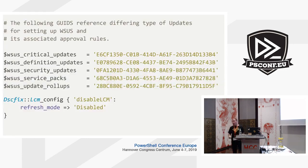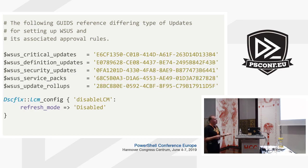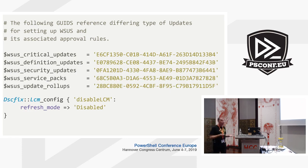Looking at the configuration, there are various categories of updates: critical updates, definition updates, security updates, and service packs. Being Microsoft, these all have lovely GUIDs, so you start off by expressing these just as variables. I haven't even put comments there other than something at the top — it's pretty obvious from the variable names what we're referring to.